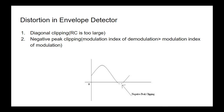In negative peak clipping, when the modulation index of demodulation is greater than the modulation index of modulation, negative peak clipping occurs. Since we detect only the upper envelope — values of voltage greater than zero — the negative side of the signal gets clipped off. Don't confuse this with the modulation index of the AM signal; the modulation index of demodulation represents what changes in amplitude of the modulated signal are happening at the demodulation process.